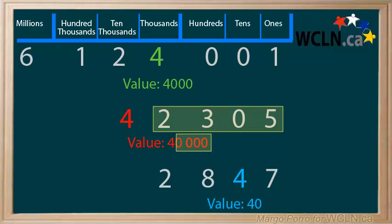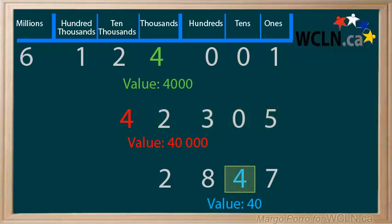Again, the number of zeros is the same as the number of digits that follow the 4 in the original number. The 4 in the third number is in the tens place and is only followed by 1 digit. So when we give the value of 4, it is followed by only 1 zero, to show the value of 4 tens, which is 40. Always remember, the number of zeros is the same as the number of digits that follow the digit in the original number.